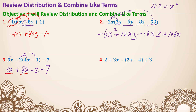But we're not done because now we have like terms. 3x and 8x are like terms because they both have an x and their x are both to the first power. We're just adding the numbers in the front together: 3 plus 8 is 11, so 3x plus 8x is 11x. On the back, negative 2 and negative 7 combined together is negative 9.